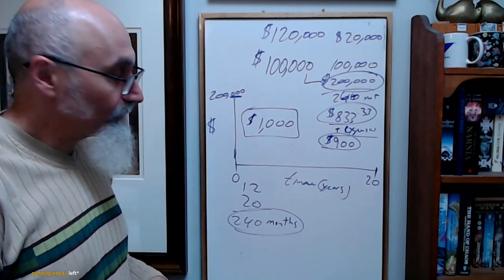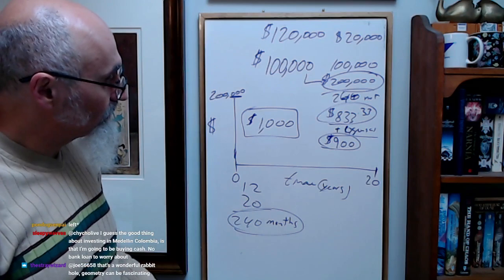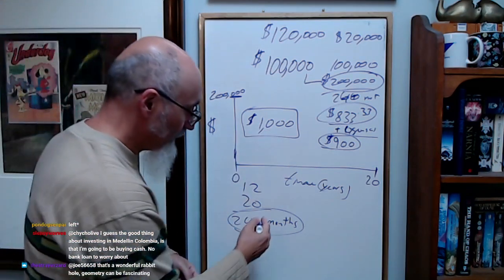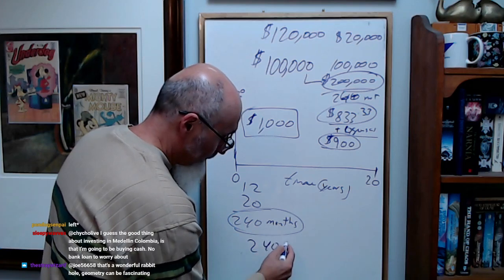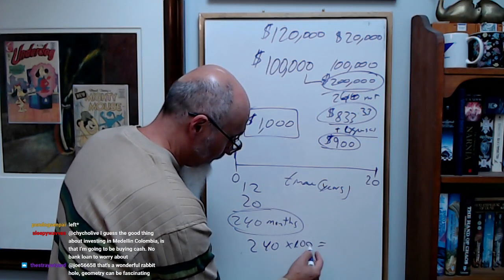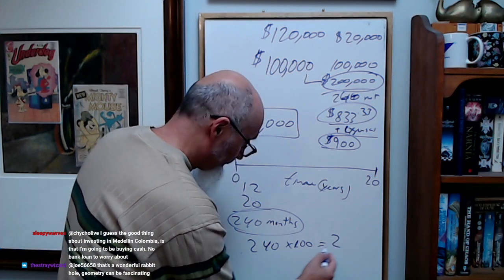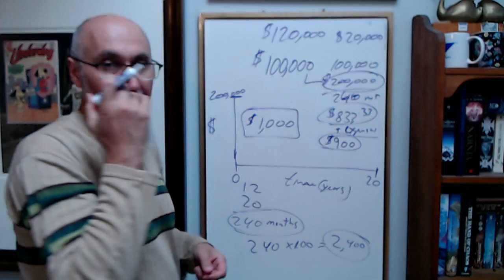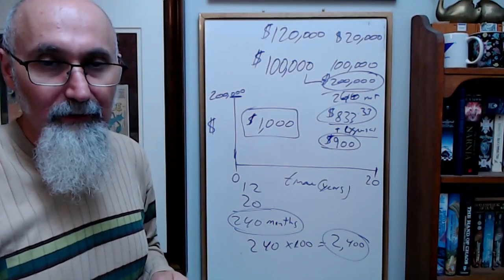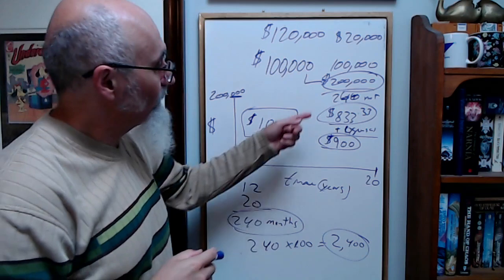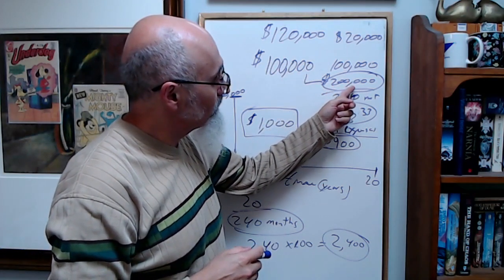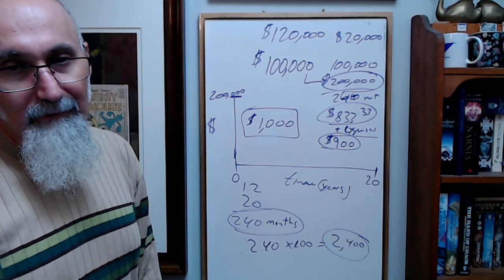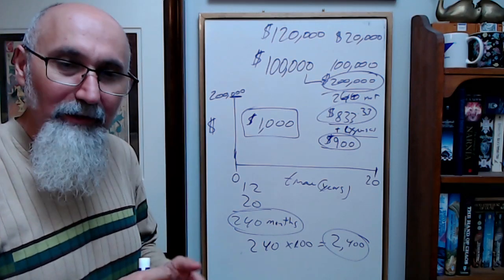Simple mathematics says rent this out for at least a thousand. You rent it out for a thousand dollars. That's a hundred dollars a month. So two hundred forty—a hundred dollars a month over 20 years, you're making an extra two thousand four hundred dollars plus you're gonna have an apartment. Plus you have an apartment. So you have two thousand four hundred dollars in equity.